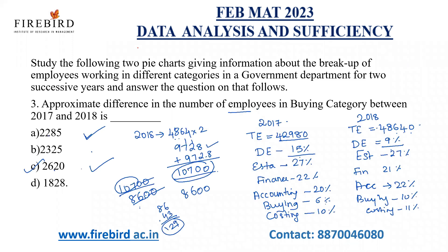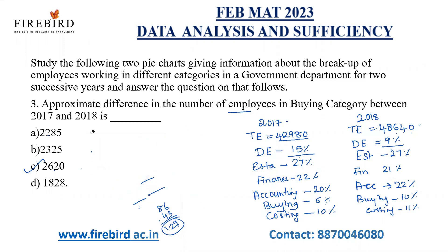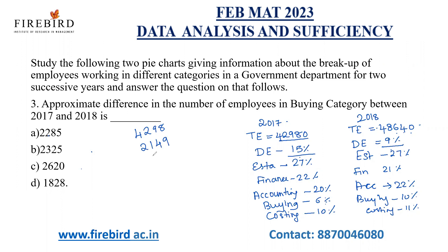Now the next question: approximate difference in the number of employees in the buying category between 2017 and 2018. In 2017, buying is 6% of 42,980. 10% is 4,298; 5% is 2,149; 1% is approximately 430. So 6% is around 2,579 employees in buying in 2017.